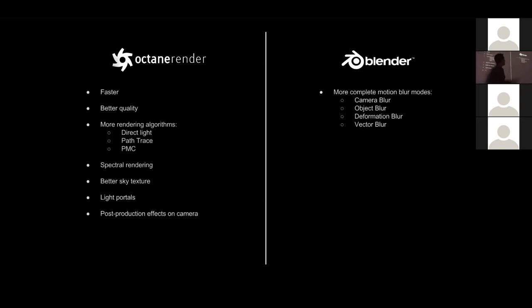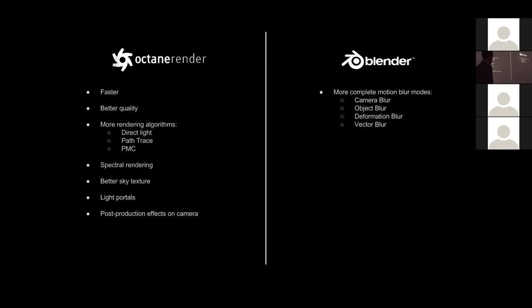Now let's go to what Cycles has that Octane doesn't. Cycles is very good at calculating motion blur — essential for visual effects. You have all kinds of motion blur options: camera blur (when an object is static and the camera is moving), object blur (when the camera is static and the object is moving), deformation blur (when an object deforms), and vector blur as a post-production node. In Octane for Blender, you only have camera blur — no object deformation or vector blur.